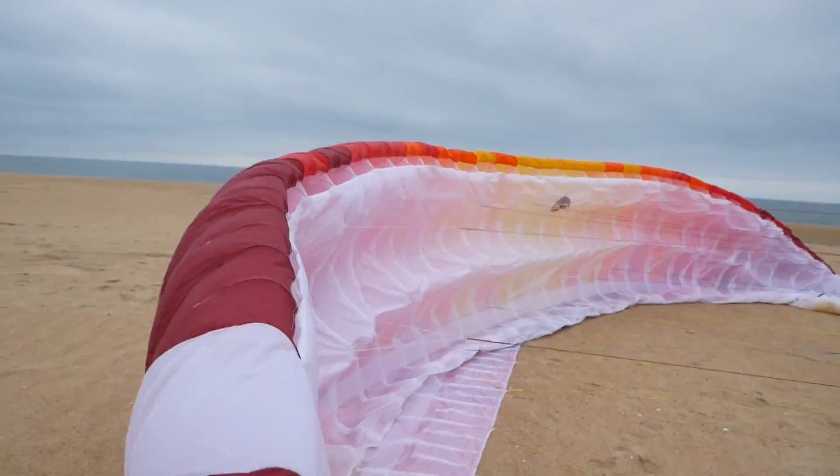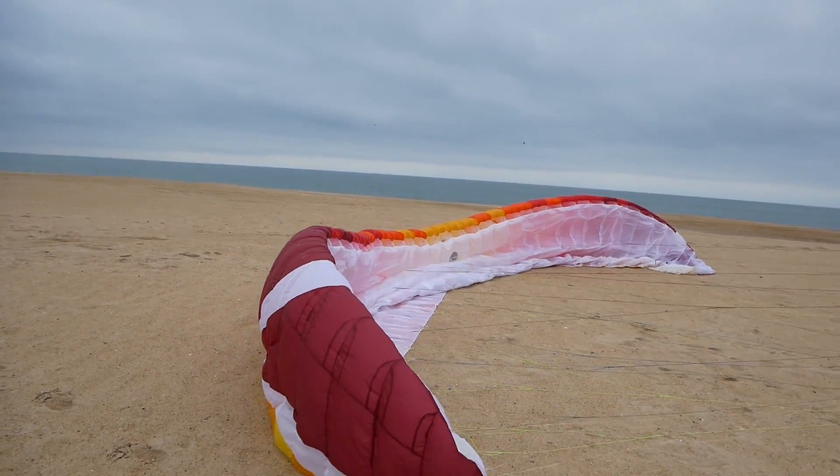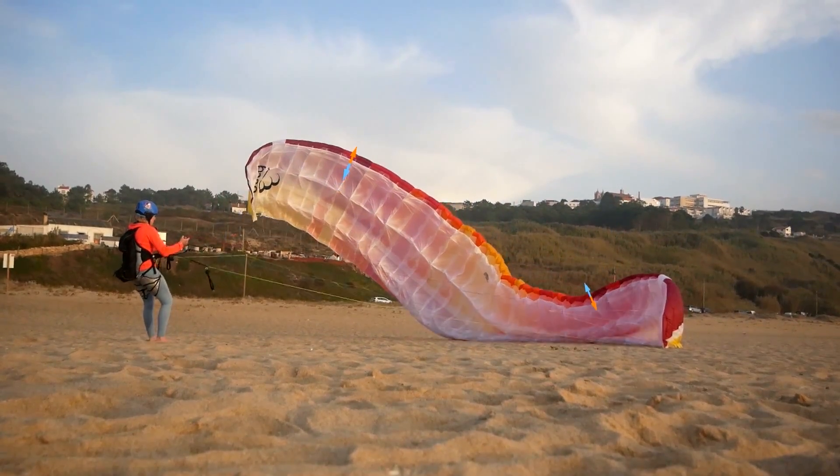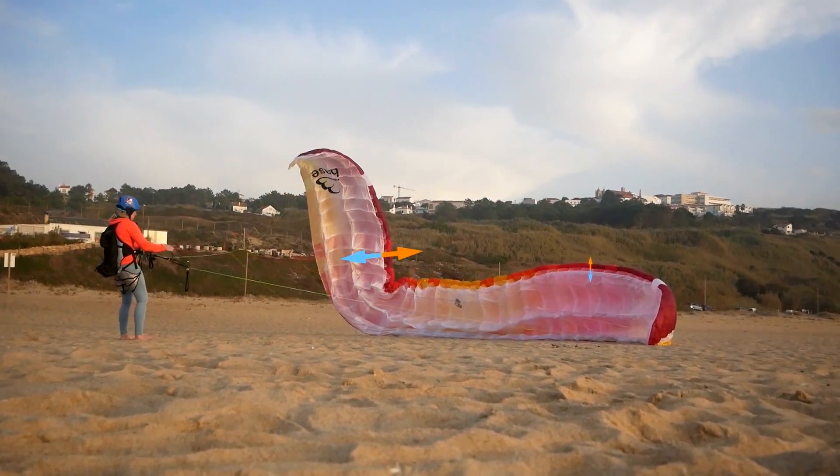This is also the case in three dimensions across the span of the wing. For instance, if the wing doesn't come up straight, one side is pushing more air down than the other.